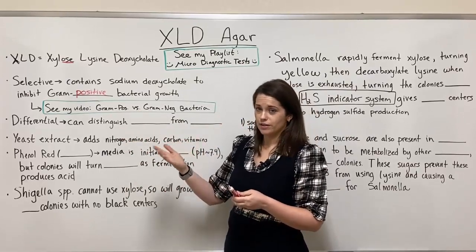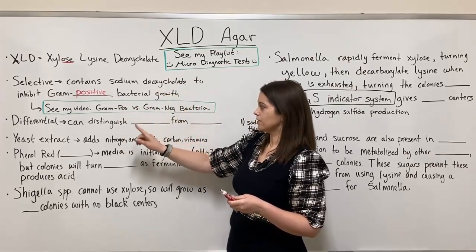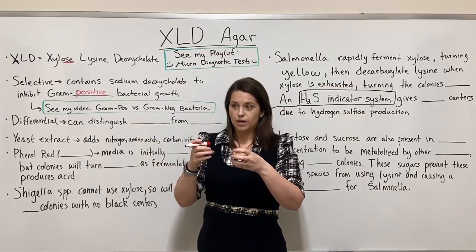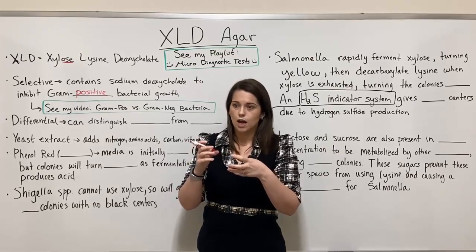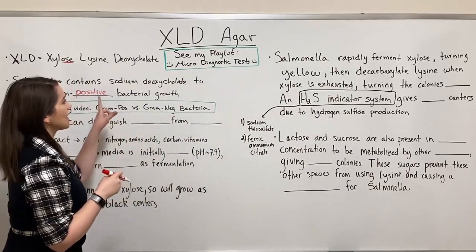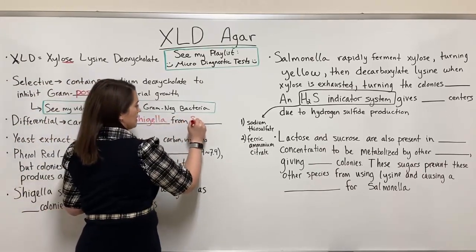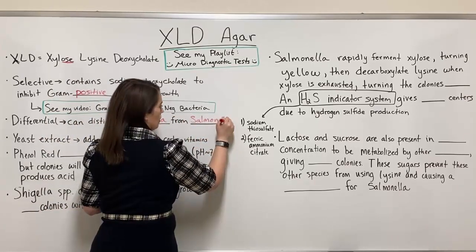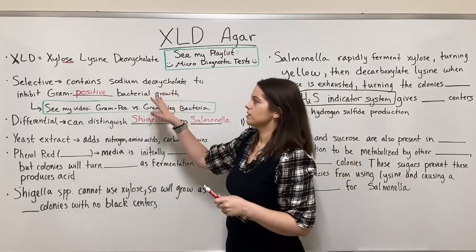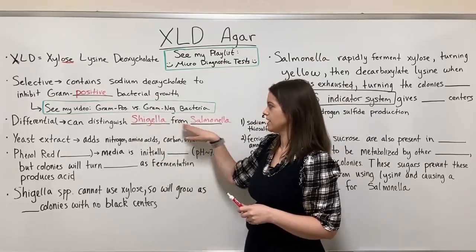If you need a refresher on the difference between gram-positive and gram-negative cell walls, check out my video on that topic. XLD Agar is also differential, meaning that of the organisms able to grow on XLD Agar, there will be differences — usually in color, some kind of phenotypic difference — so you can distinguish one from another. In this case, XLD Agar is used to distinguish Shigella from Salmonella, or to detect whether one of these is present in a sample.